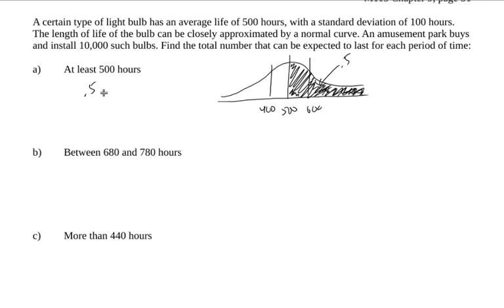So the probability of each bulb lasting more than 500 hours is 0.5. If I'm claiming this is binomial by saying that they're all independent, we can just do n times p. The expected number of bulbs is n times p. So 0.5 times 10,000, which is 5,000. We would expect 5,000 bulbs to still be good.